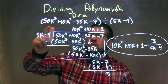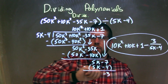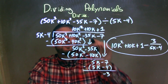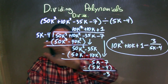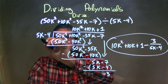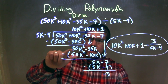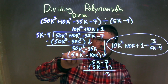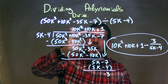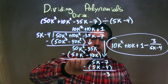Let's recap. We had 50k³ plus 10k² minus 35k minus 7 divided by 5k minus 4. I rewrote that as long division with my divisor and my dividend. I asked: what times 5k is 50k³? That's 10k². Multiply 10k² by 5k minus 4 to get 50k³ minus 40k². Subtract and got 50k². Brought down minus 35k. Asked the same question: what times 5k gives me 50k²? That's 10k. 10k times 5k minus 4 gave me 50k² minus 40k.